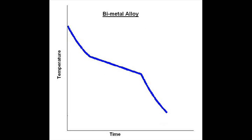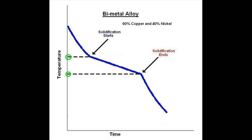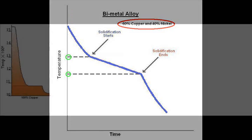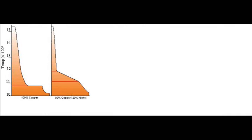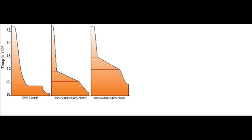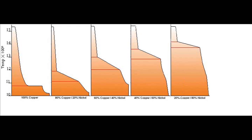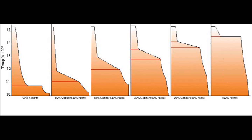Now this is a cooling curve for a bimetal alloy. A bimetal alloy is an alloy made up of two pure metals. And as we can see, solidification starts here and solidification ends here, and this gives us two distinct different temperatures. Now this cooling curve is specifically for an alloy made of 60% copper and 40% nickel. If we were to change those ratios, we would change the curve. So what we need to do is have a look at the different cooling curves for different percentages of copper versus percentages of nickel. I'm just going to fire these in side by side so we can get a broad idea of the cooling characteristics of a copper-nickel alloy.